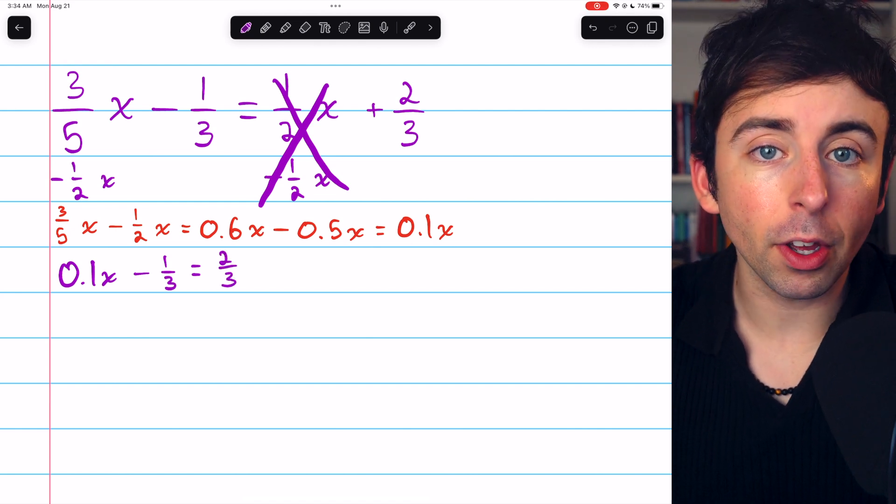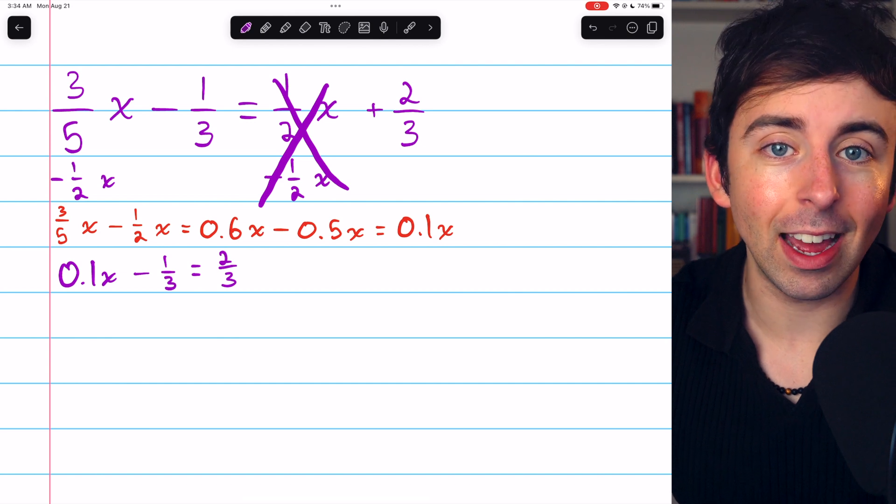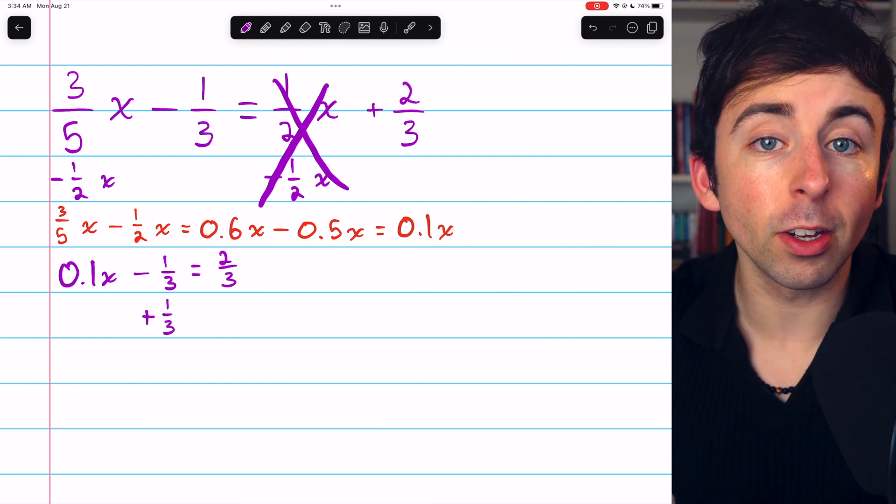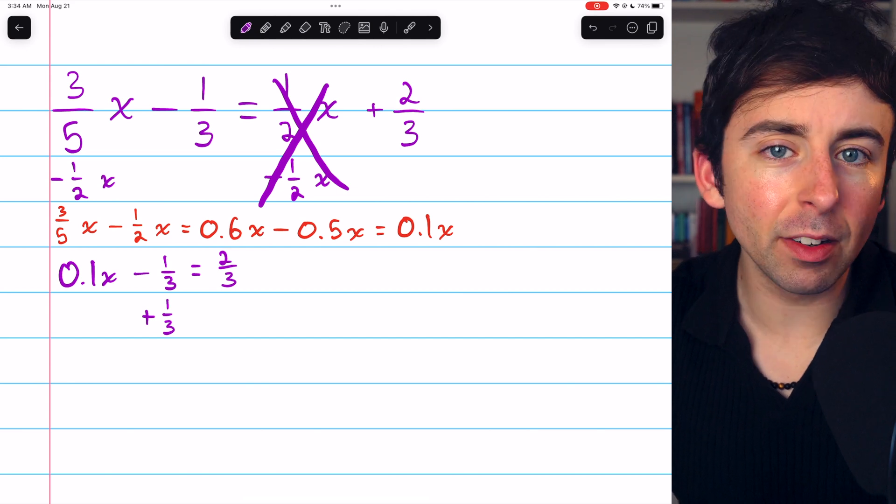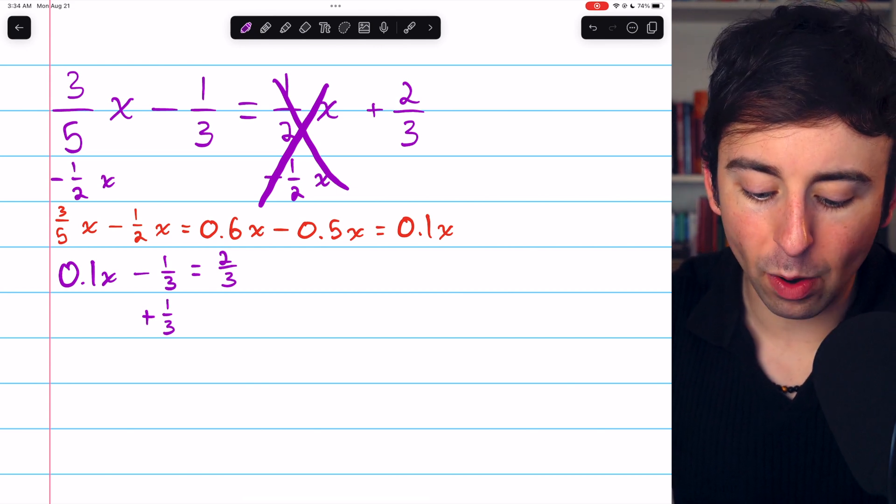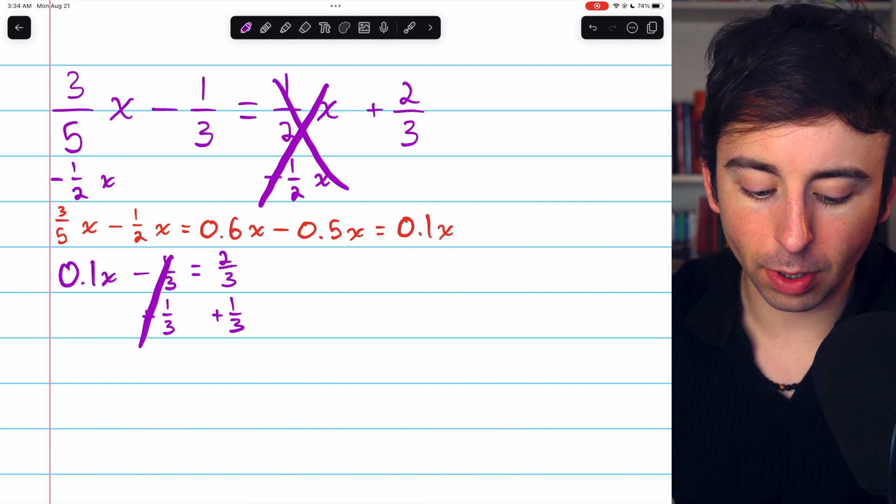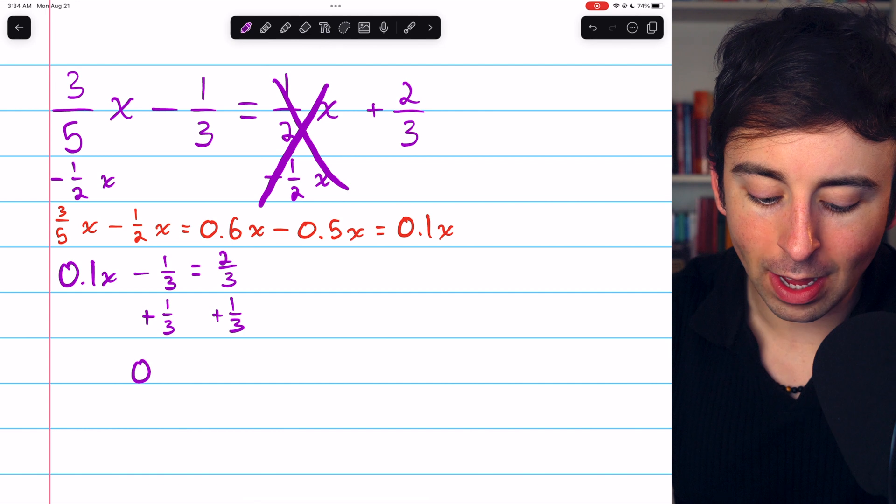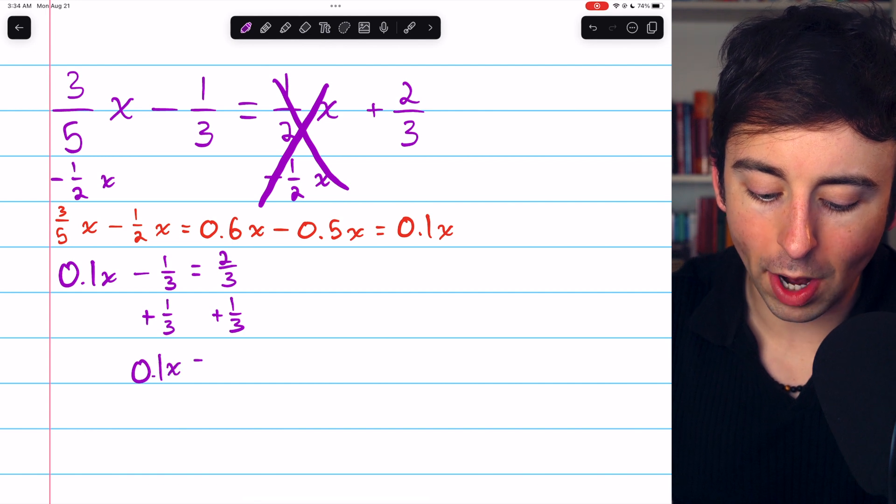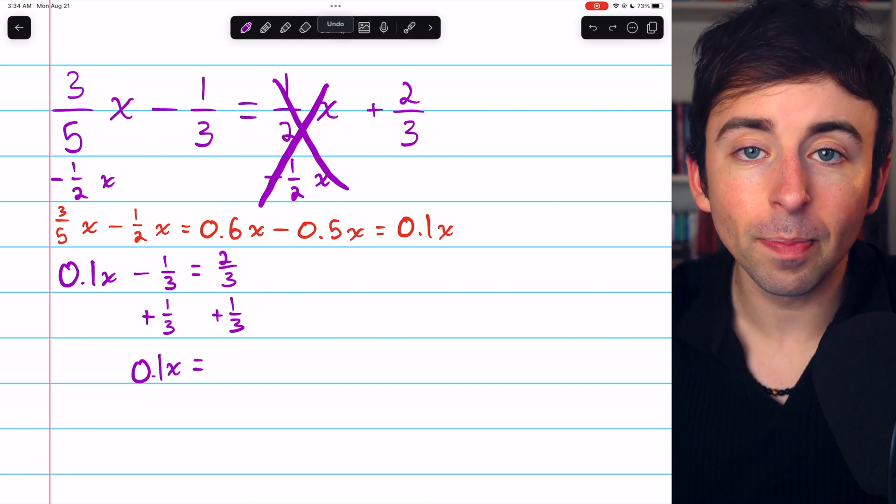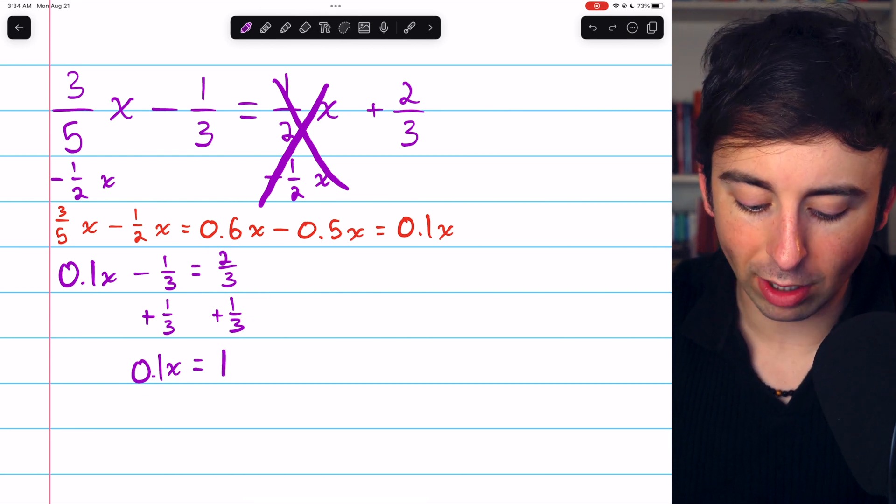Now we want to gather all the constant terms to the right side of the equation. So let's move this 1/3 that's on the left. It's negative 1/3, so we'll have to add 1/3 to both sides to get rid of it. On the left, the minus 1/3 and plus 1/3 cancel out, so we're just left with 0.1x on the left. On the right, 2/3 plus 1/3 is 3/3, which is 1.